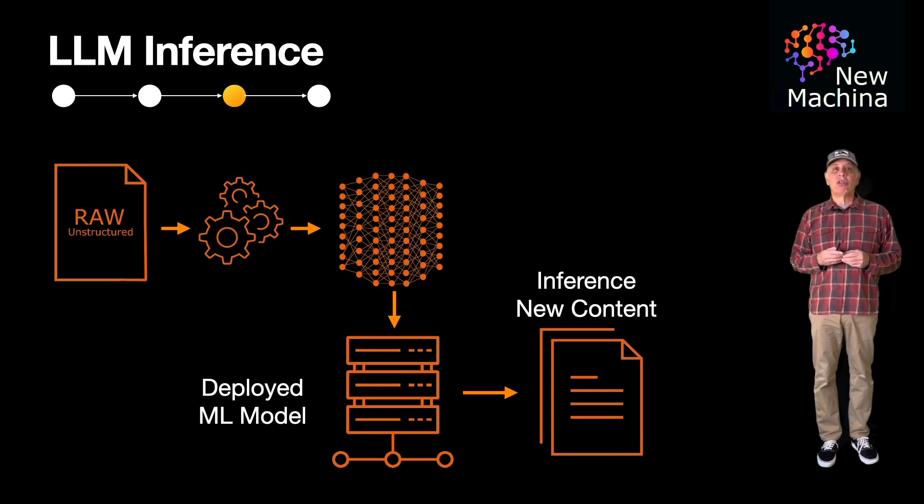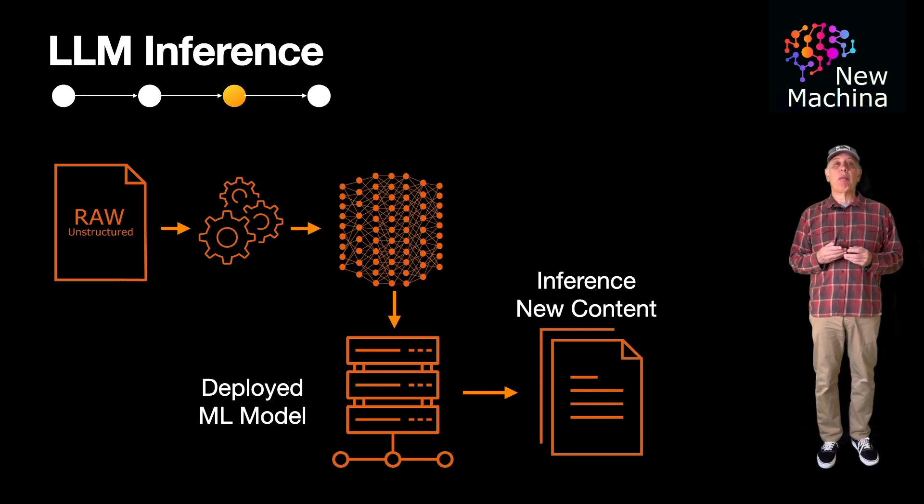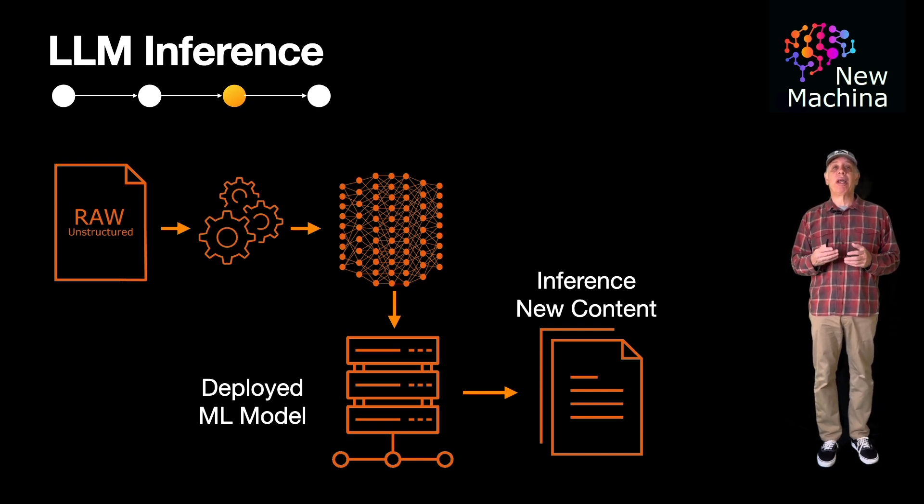So now you should understand the difference between model training and model inference. All AI ML models need to first be trained using training data, and once trained, the ML model can be used in production to generate inferences.